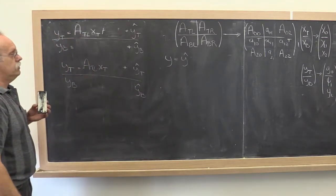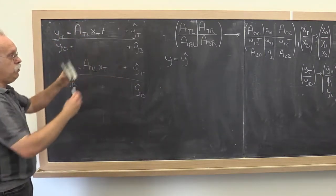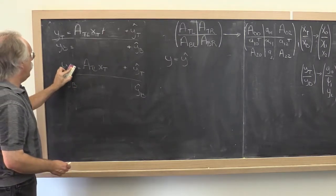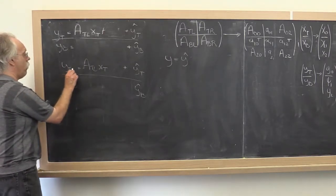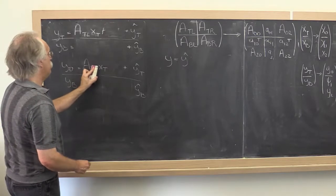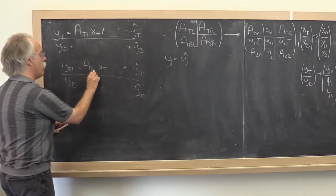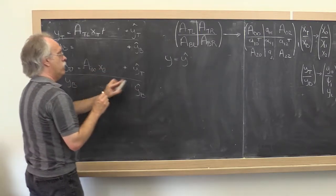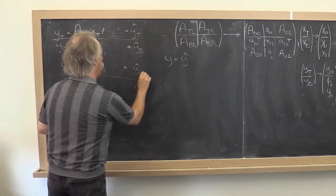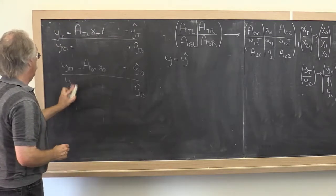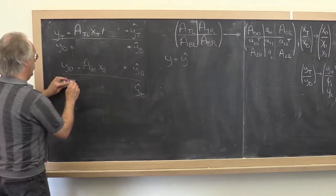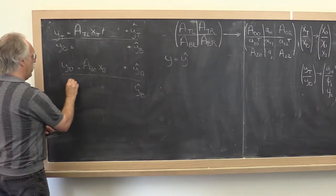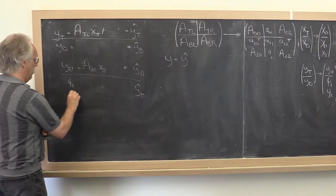That's our loop invariant. And we now say at the top of the loop we repartition. Y top becomes y zero. A top left becomes a zero zero. X top becomes x zero. And similarly, we get that y bottom becomes x zero.